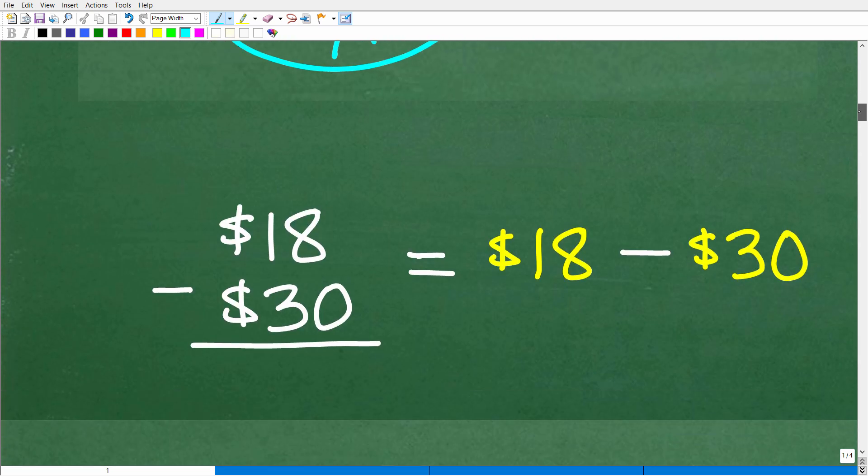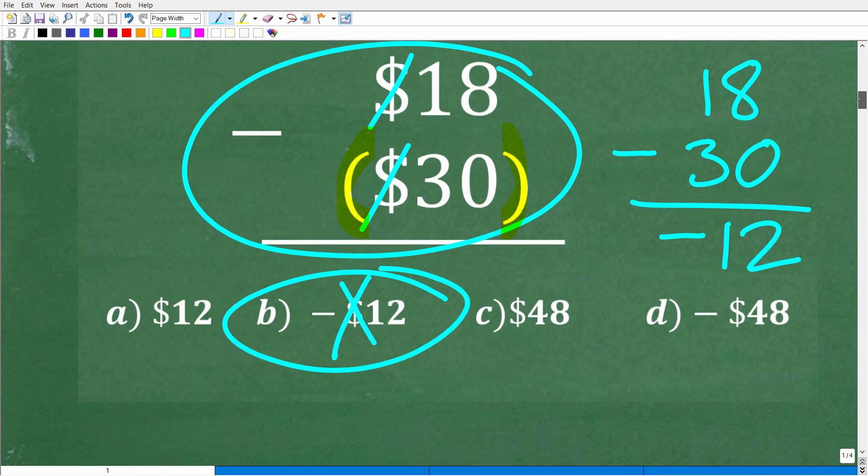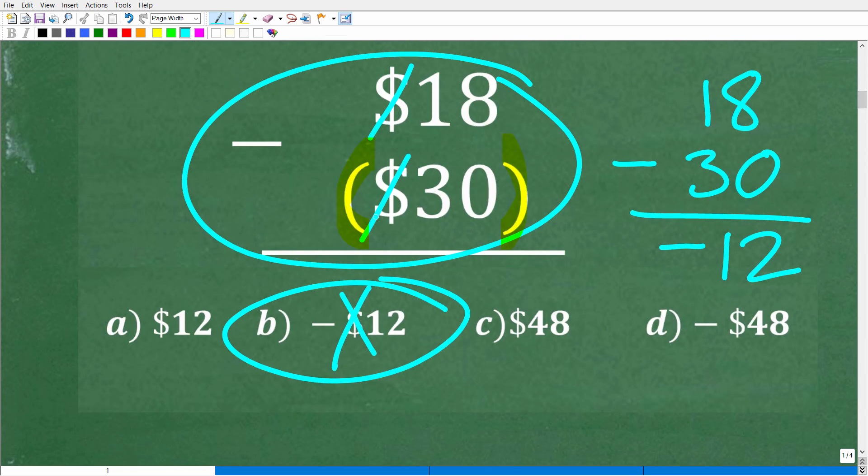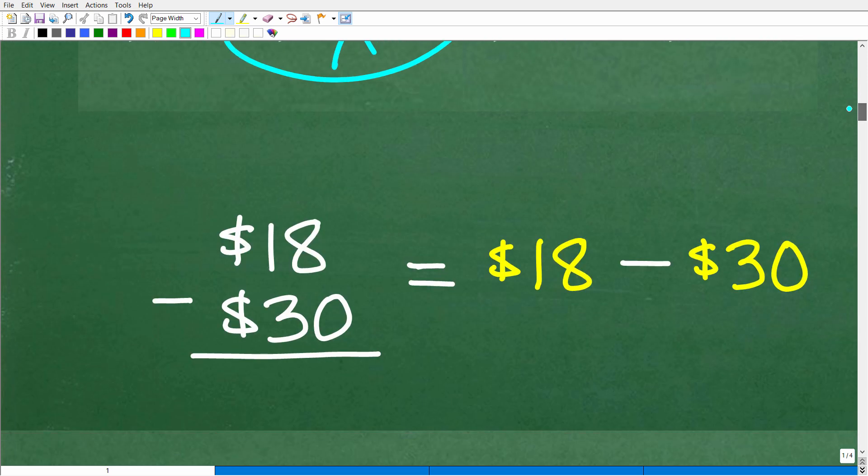Now, in my previous videos, I went from here, $18 to $30, but I kind of dropped the parentheses. I went from here to here. And I should not have done that, because these parentheses are absolutely critical. So what I did was I went from $18 minus $30. Now, I'm going to get back to these parentheses here in just one second.